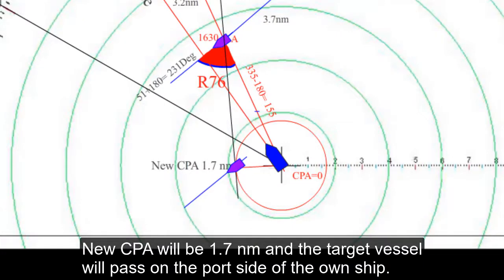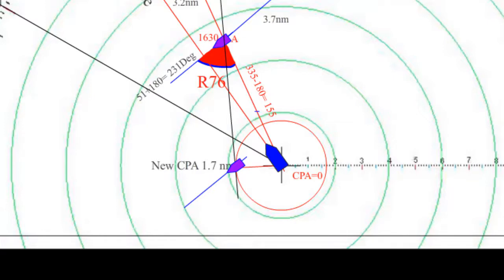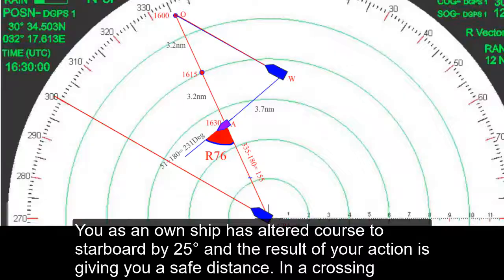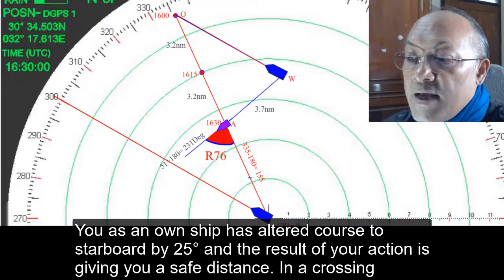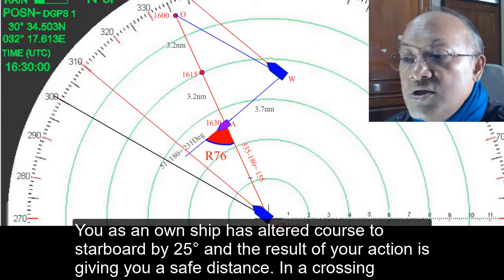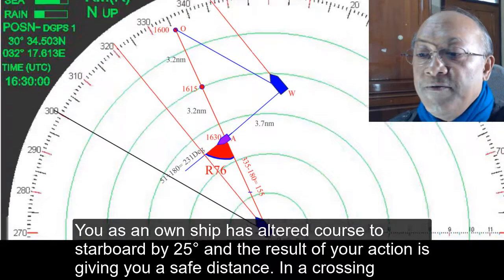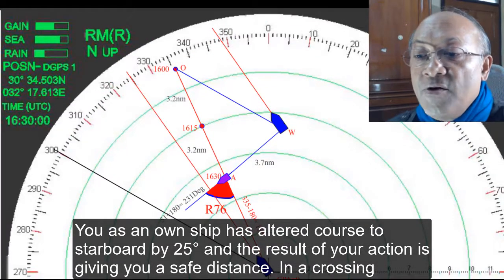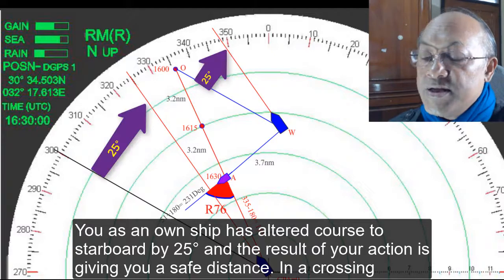New CPA will be 1.7 nautical miles and the target vessel will pass on the port side of the own ship. You as an own ship has altered course to starboard by 25 degrees and the result of your action is giving you a safe distance.